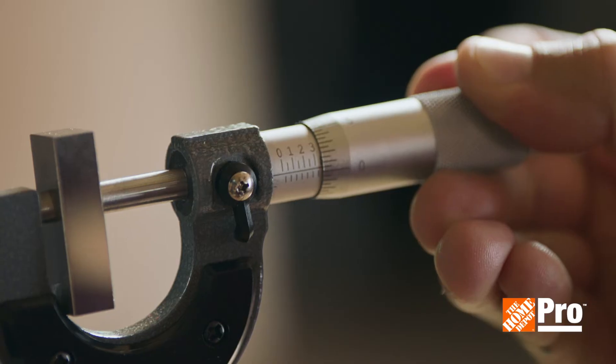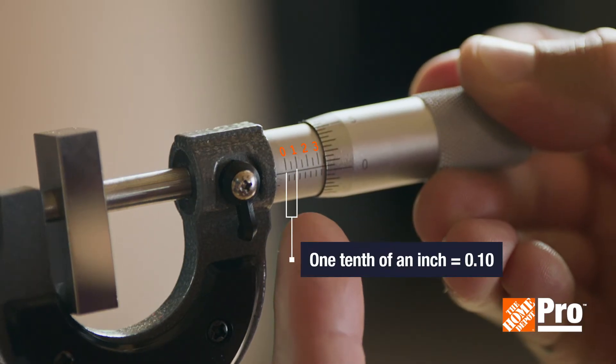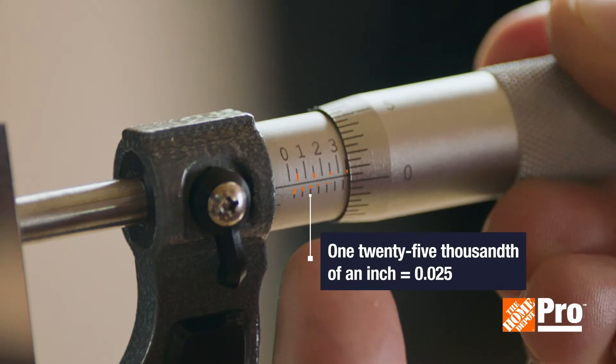Read the sleeve first. The whole numbers represent one tenth of an inch or 0.10. The shorter quarter marks between those represent 25 thousandths of an inch or 0.025.